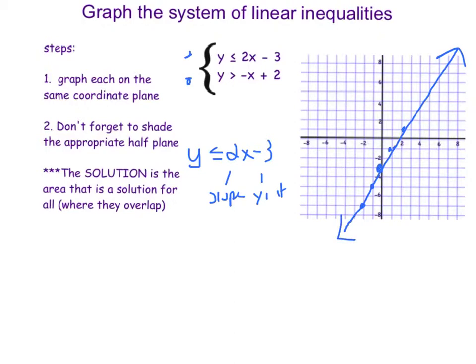It is a less than, so again, I'm assuming it's going to be the points below. But we can double-check that by plugging in 0. 0 is less than 2 times 0 minus 3. 0 is less than or equal to negative 3. That does not make a true statement. So we know that the half plane that includes 0, 0 is not going to be shaded. It's going to be all of this down here. Just like we thought, it's below the line.